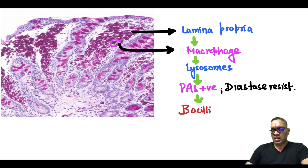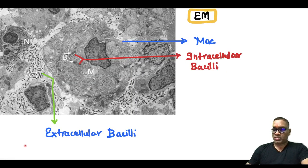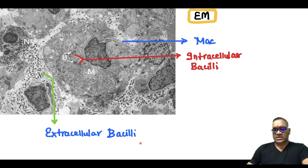You can see this is the PAS-positive diastase staining. The Lamina propria is showing macrophages, and the lysosomes are containing PAS-positive and diastase resistant bacilli. To confirm these are lysosomes, we look into the electron microscope. You can see this is the macrophage and these are the intracellular bacilli within the lysosomes. There will be some extracellular bacilli also visible in Whipple's disease.